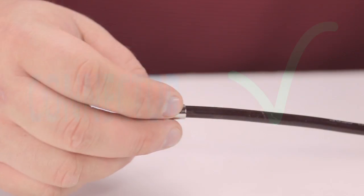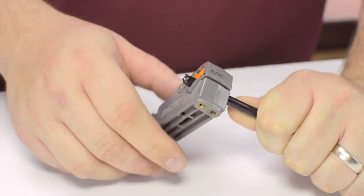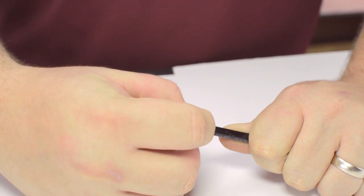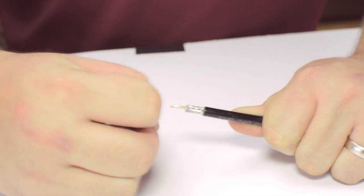Start by inserting the ferrule over the outer jacket of the cable. Then using your cable stripper, strip back the outer jacket and dielectric. The advantage of using a cable stripper is that it will strip back the jacket and dielectric at the same time.